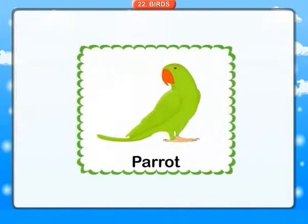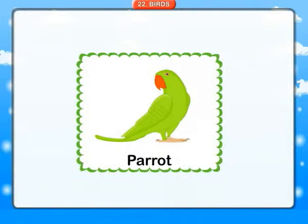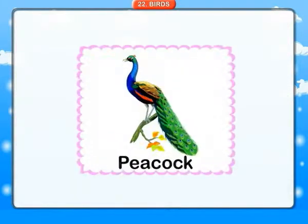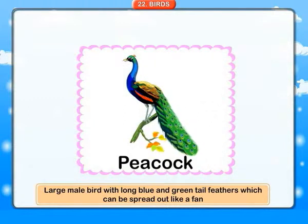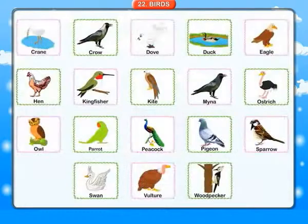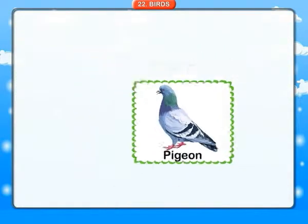Parrot: any of various types of tropical bird with hooked beaks and bright colored feathers, some of which can be trained to imitate human speech. Peacock: a large male bird with long blue and green tail feathers which can be spread out like a fan. Pigeon: a bird of the dove family.